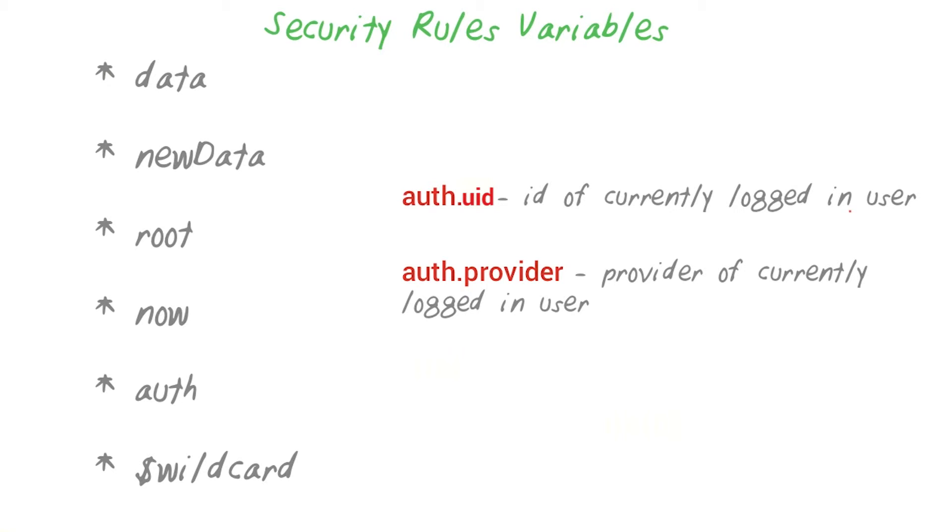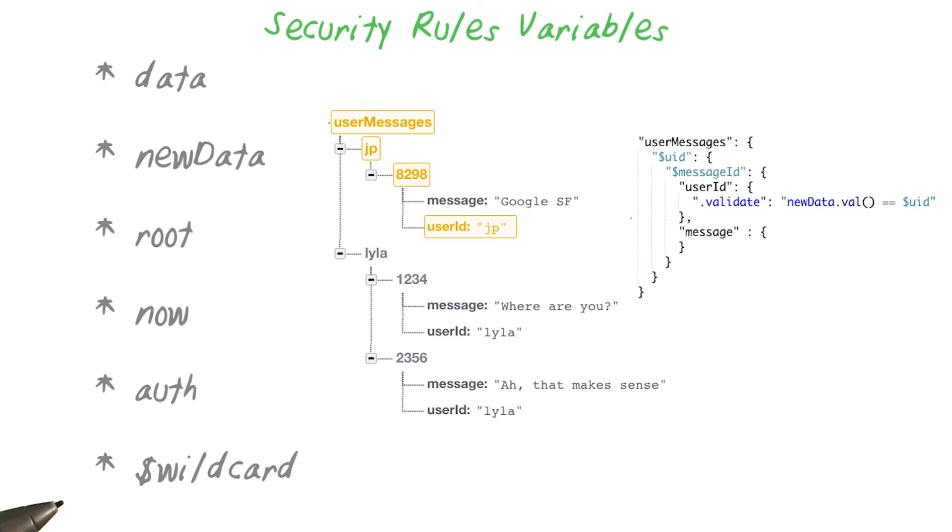A lot of the permissions to edit lists and shopping list items dealt with who the logged in user was. For any rules related to who the user is, you will need to use the auth variable. Beyond representing dynamic keys, wildcard variables are also available to you in the rules themselves.